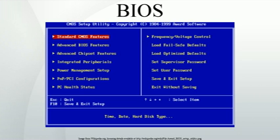BIOS extension ROMs gain total control of the machine, so they may never return control to the BIOS that invoked them. An extension ROM could in principle contain an entire operating system or an application program, or it could implement an entirely different boot process such as booting from a network. Operation of an IBM-compatible computer system can be completely changed by removing or inserting an adapter card or a ROM chip. A computer system can contain several BIOS firmware chips. The motherboard BIOS typically contains code to access hardware components necessary for bootstrapping the system, such as the keyboard, display, and storage.